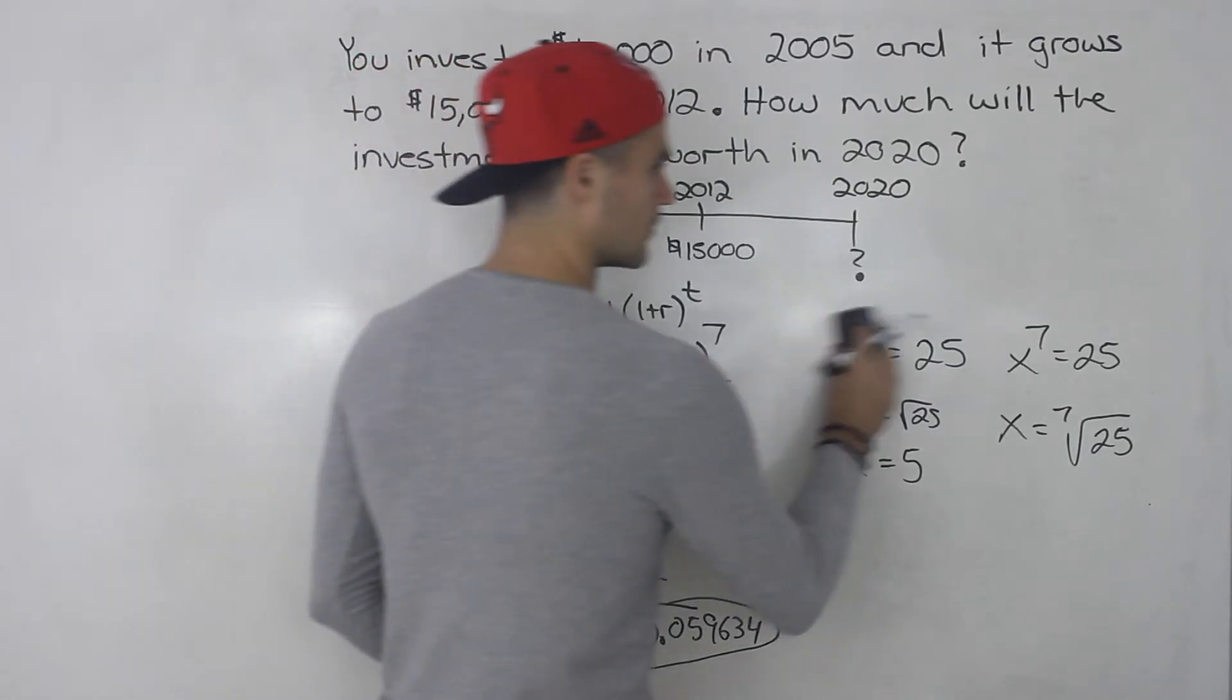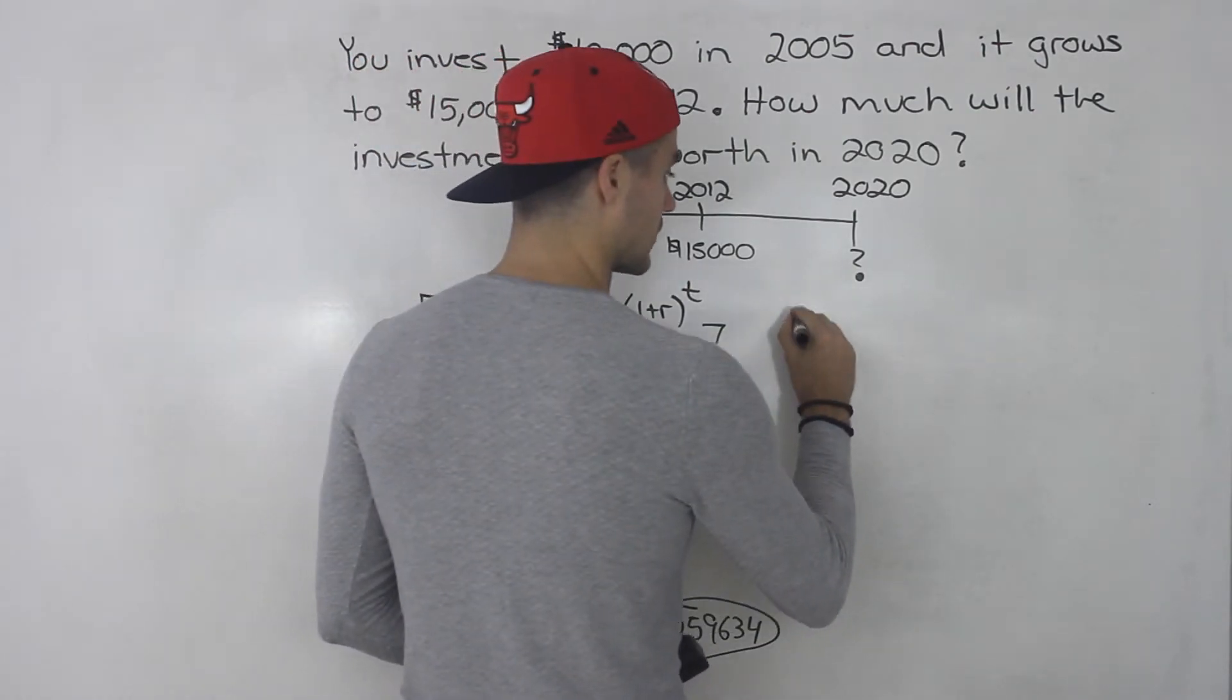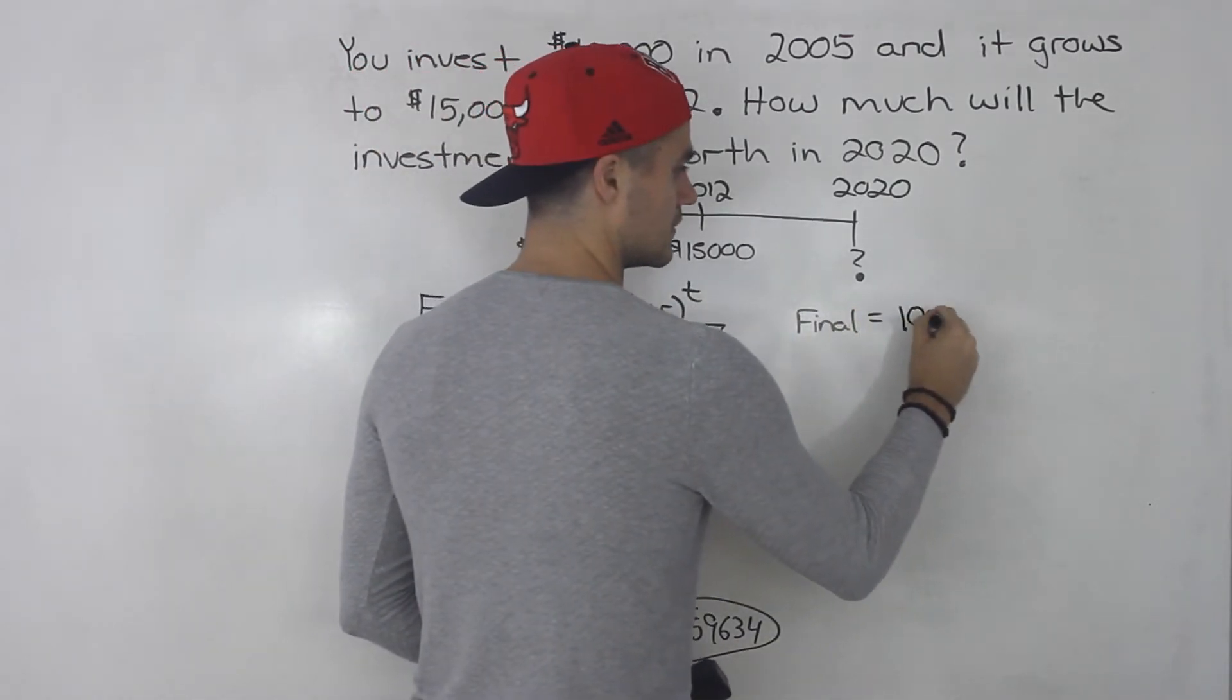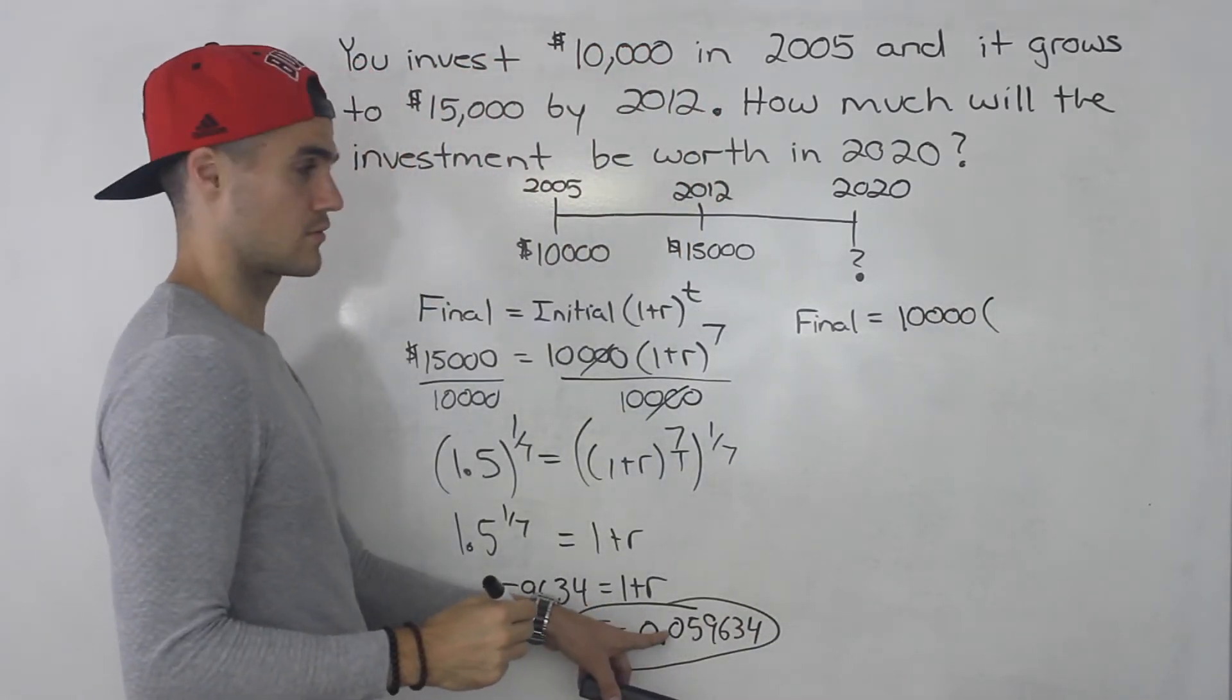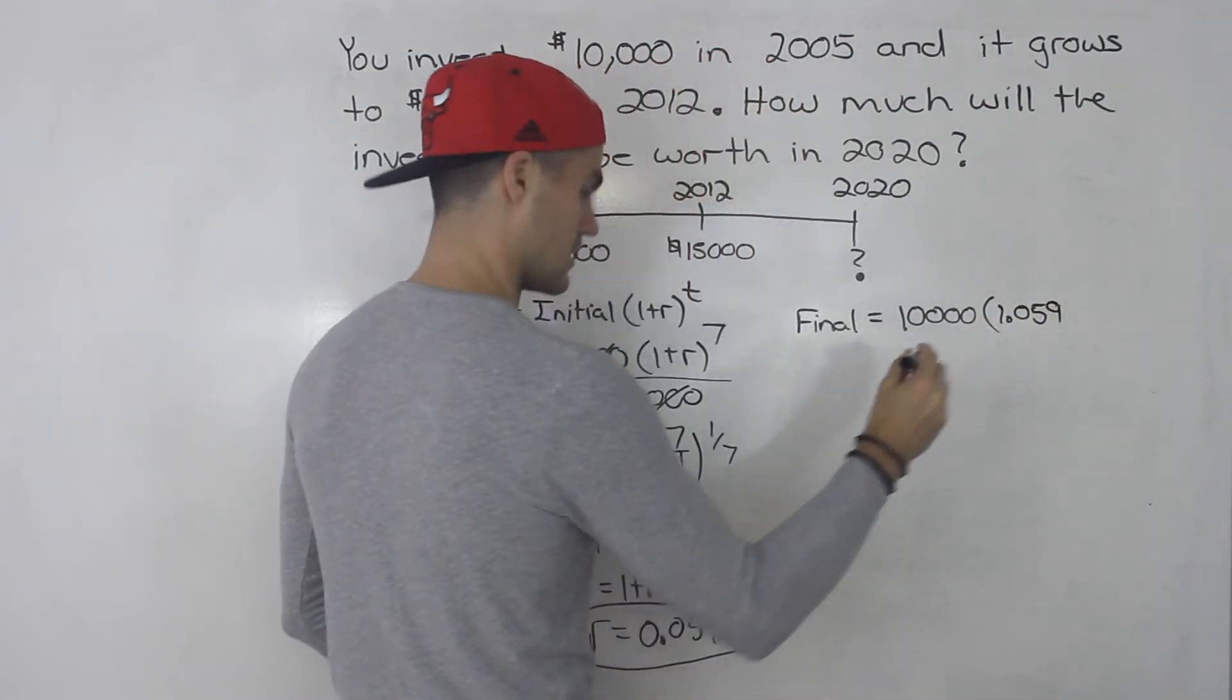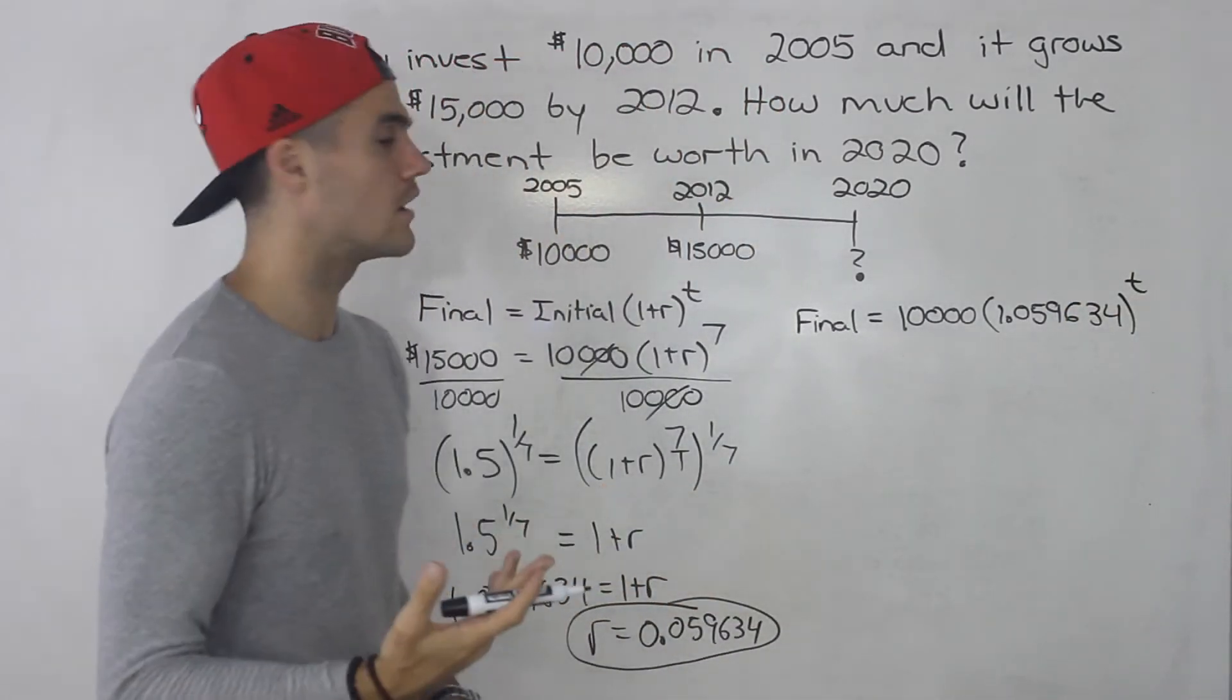Now that we have the r we also have the general formula. So basically the final amount is going to be the initial amount, 10,000, and then 1 plus the rate. So 1.059634 to the power of t, where t is the number of years.